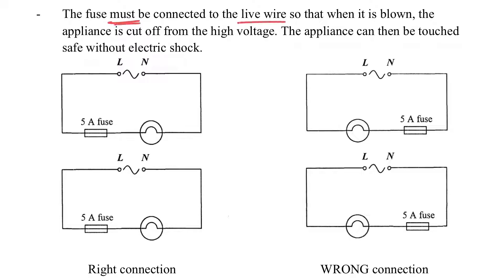The fuse must be connected to the live wire so that it can be more safe. Once again, let's see what will happen if it is connected correctly and if it is connected wrongly. Now for the left hand side, you can see that actually the current can blow. The current is too large, then the fuse will blow. And after it blows, then it cuts the live wire from electrical appliances.